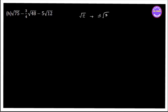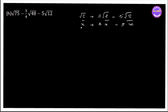3 root 2 minus 5 root 2. The first step is to write root 2. x to y is the same, so root 2 is x. So 3x minus 5x. x to 3 is 4x, so 5 minus 5x. The second step: minus x. That's the point.